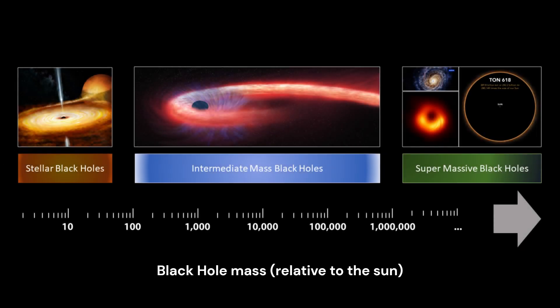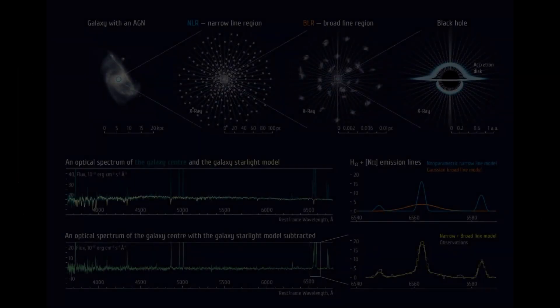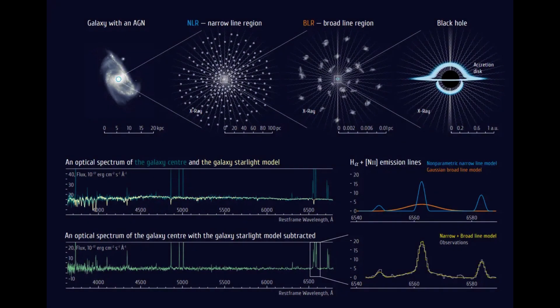Intermediate mass black holes have masses between stellar mass black holes and supermassive black holes, typically in the range of thousands to hundreds of thousands of solar masses. The formation mechanisms of intermediate mass black holes are still a subject of research and debate. They may result from the gradual accumulation of matter in dense star clusters, or the mergers of smaller black holes.